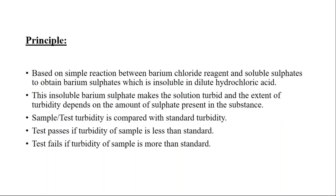The difference between limit test for chlorides and sulfates is: in chlorides you used dilute nitric acid, here you use dilute hydrochloric acid. The reagent in limit test for chlorides was silver nitrate; here we are using barium sulfate reagent. In chlorides the reaction involved soluble chlorides; here the reaction involves soluble sulfates.